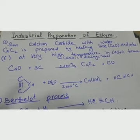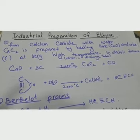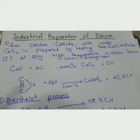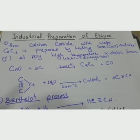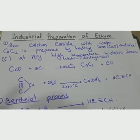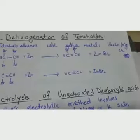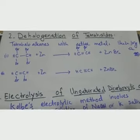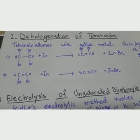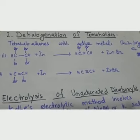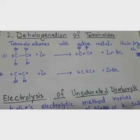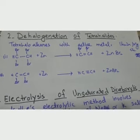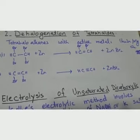The first industrial method is preparation from calcium carbide. The second method is dehalogenation of tetra halides, where adjacent carbons contain four halogen atoms in total.